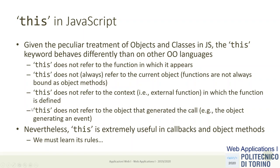There are some common misconceptions. First, 'this' does not refer to the function in which it appears — it does not refer to the function object itself. Second, 'this' does not always refer to the object in which the function is defined, because functions can be copied, transferred, and called in another context.